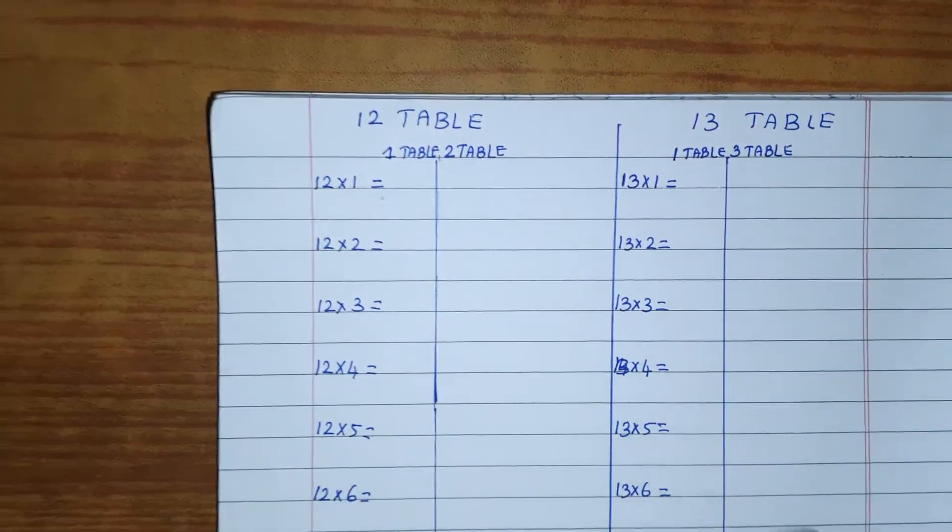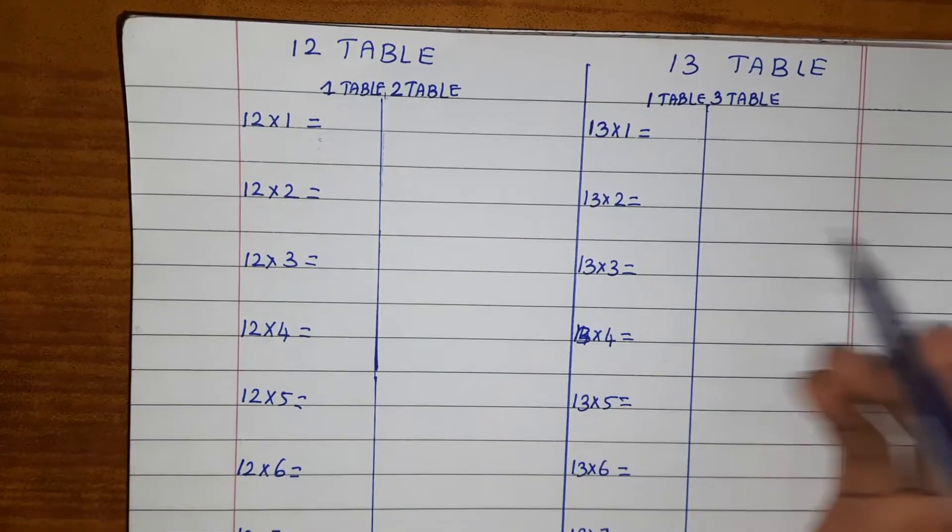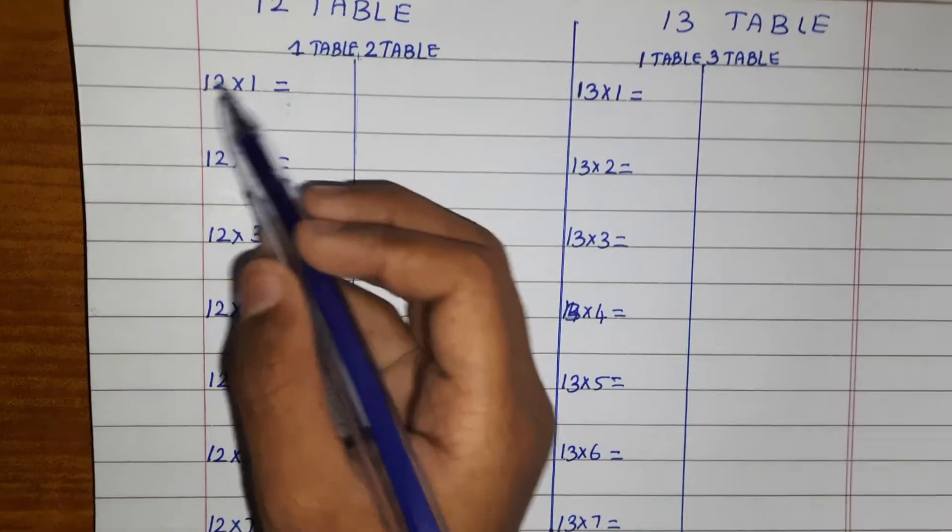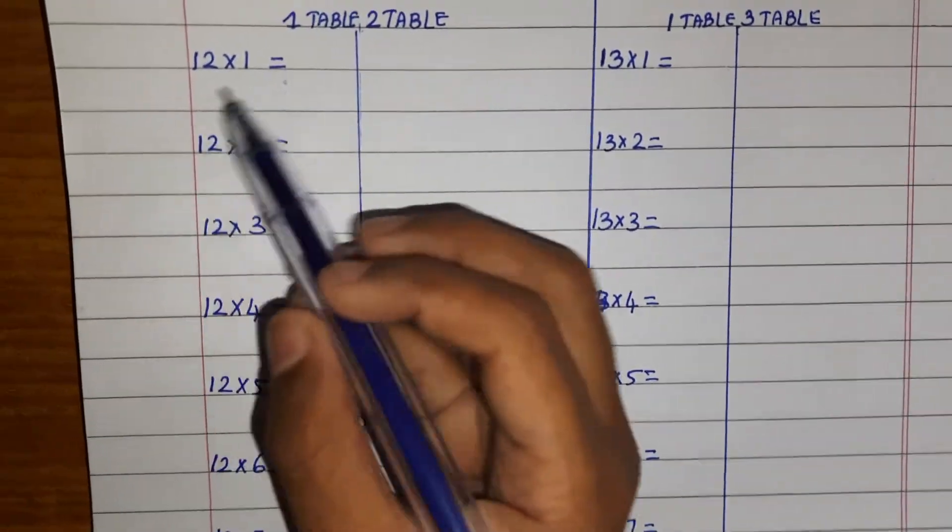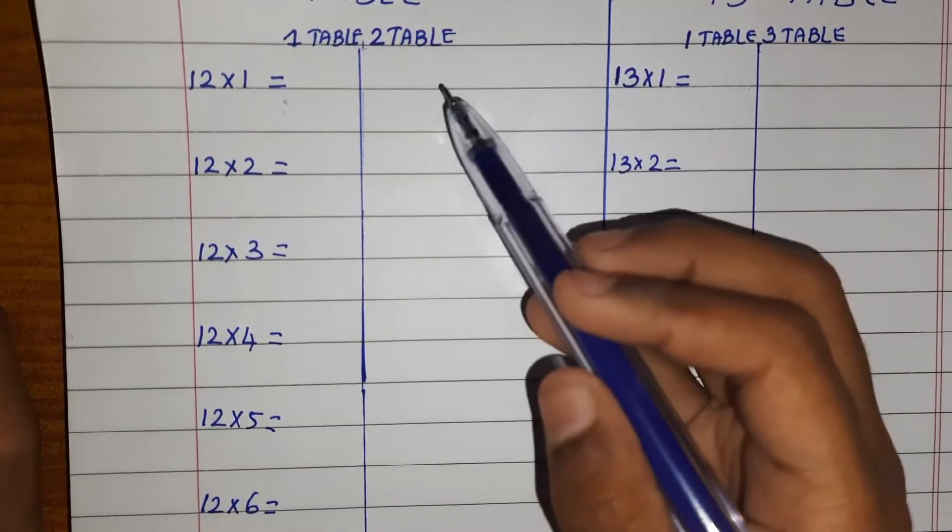Okay, so I wrote one table, two table, one table, three table. So first, in the ones place there you just write one, so I wrote one table. In the one digit there's two, so I wrote two table.